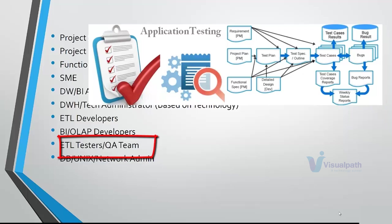The ETL tester's role is straightforward — the output should match the requirements, exactly delivering what ETL developers and BI developers built, matching what the SME expects. Any deviations become bugs or observations that the SME reviews and decides to override, defer to a next release, or fix immediately. ETL testers must understand every phase, know how to execute ETL processes and reports, and test scheduling and job dependencies.